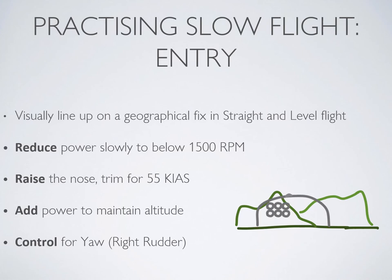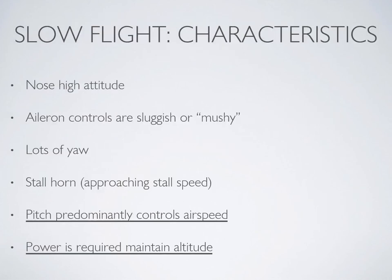The first time you try this exercise, aim for about 55 knots airspeed. Once you're on your desired airspeed, add power to about 1800 RPM, control for yaw — you're really going to need right rudder at this attitude. Keep your geofix centered and do not let it wander. At this point you should be in a slow flight condition: you need power at this airspeed to maintain altitude, you are nose high, aileron controls are mushy or giving slow response, you're experiencing lots of yaw, and you might hear the stall horn. Importantly, pitch predominantly controls your airspeed and power is used to maintain altitude.